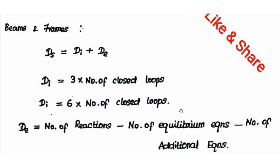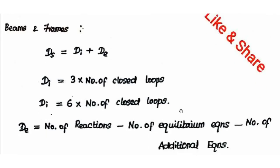External static indeterminacy = number of reactions minus number of equilibrium equations minus number of additional equations. Number of reactions depends on support type: fixed end = 3, hinge = 2, roller = 1. Equilibrium equations: plane structures = 3, space structures = 6. Additional equations are provided by internal hinges in beams and frames — each internal hinge contributes additional equations.